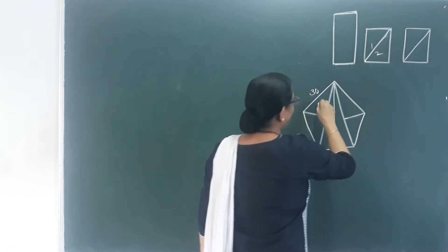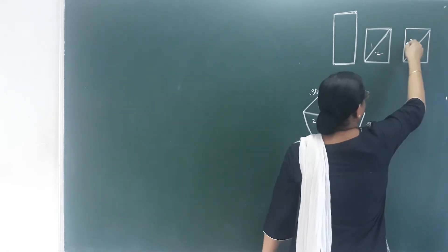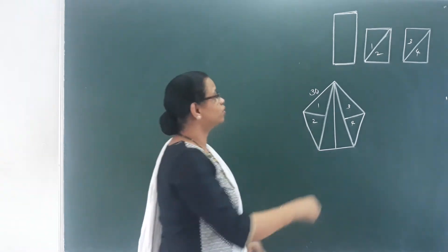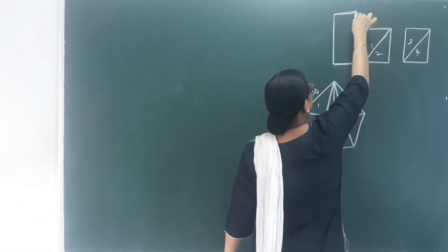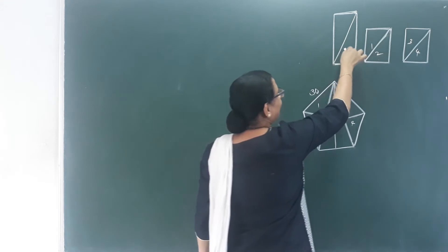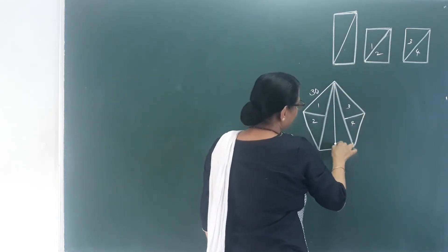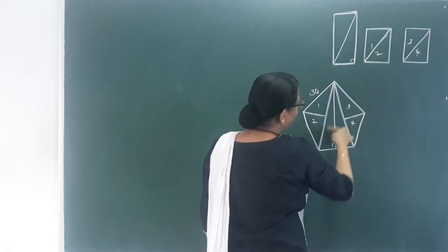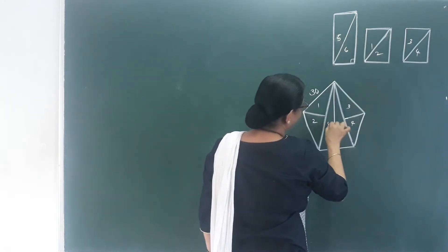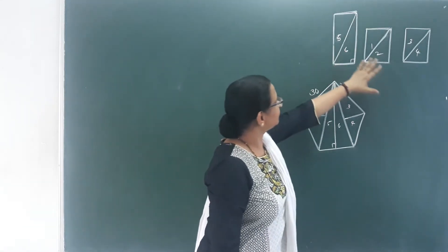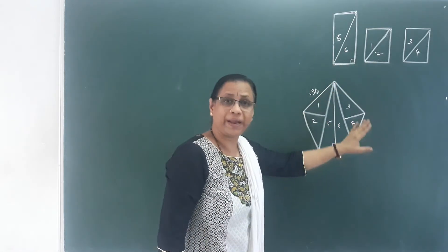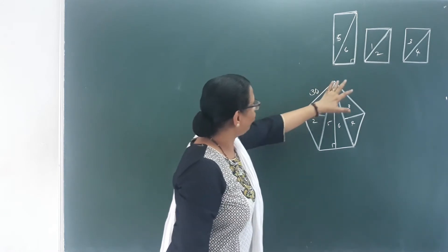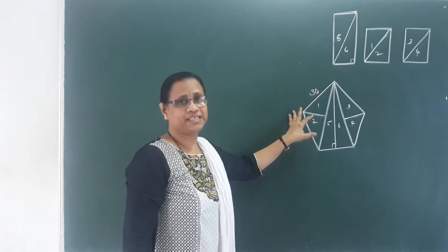You divide along the diagonal — that gives pieces one, two, three, four. This figure has diagonals here; there are 6 pieces in total forming the regular pentagon. One side of the pentagon is 30 cm.